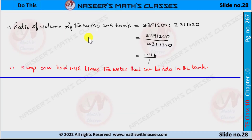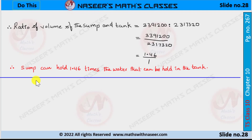Now we find the ratio of the volume of the sump to the tank. Volume of the sump is 3,391,200 and volume of the overhead tank is 1,073,880. After dividing, we get 1.46 to 1. Therefore the sump can hold 1.46 times the water that can be held in the tank.